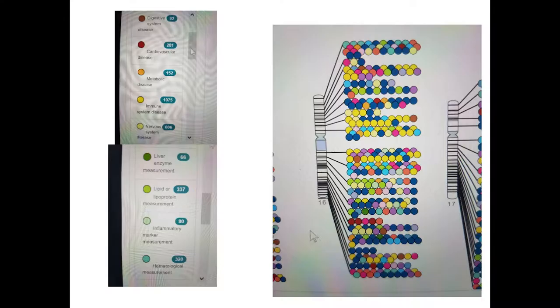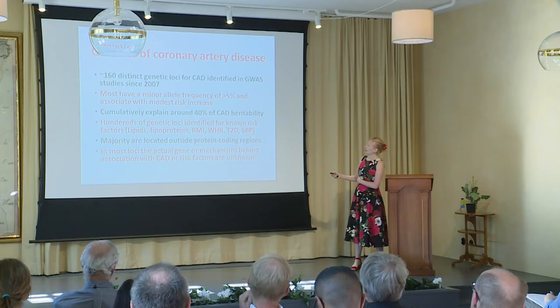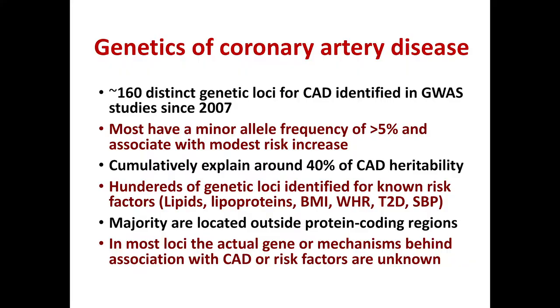Different diseases are marked with different colors. Taking coronary heart disease as an example: today there are 160 genetic variants from different genes shown to associate with coronary artery disease, and these are validated and replicated. Most have a minor allele frequency of 5%, so we all carry these variants. They cumulatively explain around 40% of heritability. There are also hundreds of loci for known risk factors like BMI, type 2 diabetes, and blood pressure. However, the actual gene or mechanism behind most associations is still unknown.